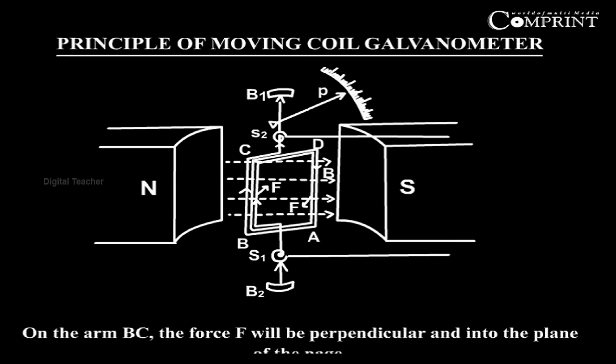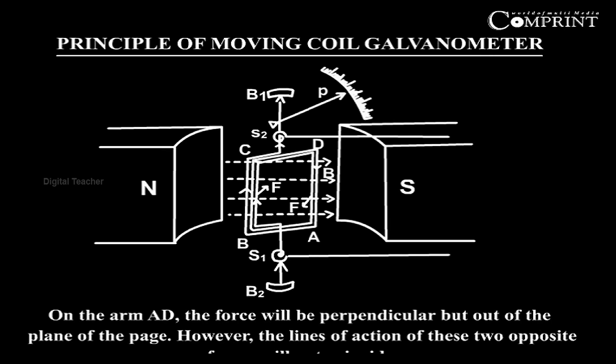On the arm BC, the force F will be perpendicular and into the plane of the page. On the arm AD, the force will be perpendicular but out of the plane of the page. However, the lines of action of these two opposite forces will not coincide.